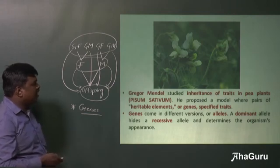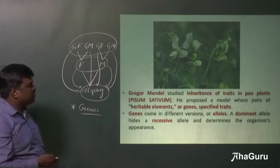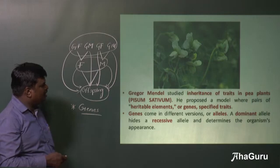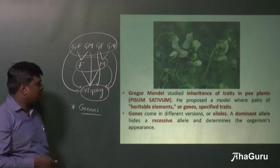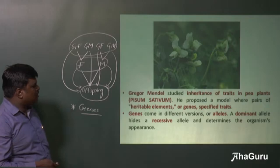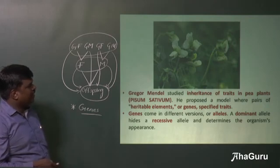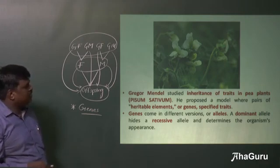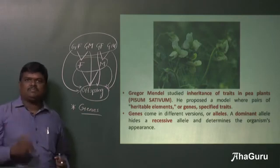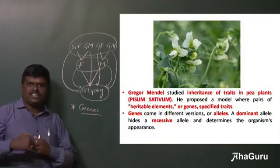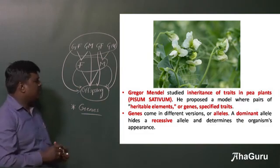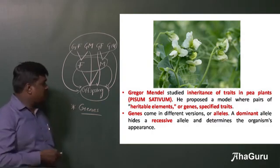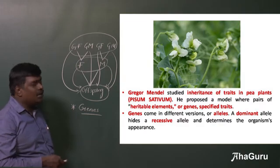Genes are the factors responsible for transmission of characteristics from one generation to the next generation. This inheritance of characteristics was studied by Gregor Mendel. For his experiment, he used a garden pea plant called Pisum sativum. He explained that inheritance of characteristics occurs through heritable elements, and it was later discovered that genes are the factors responsible for this transmission.